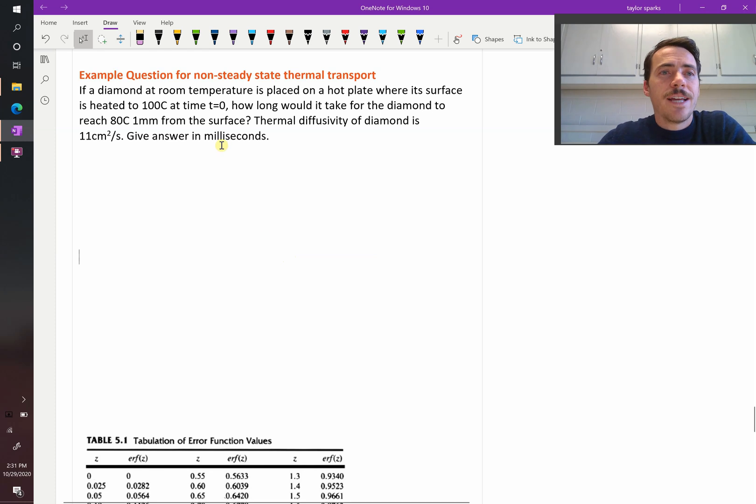How about this question? If a diamond at room temperature is placed on a hot plate where the surface is heated to 100 degrees Celsius at time t equals zero, how long would it take for the diamond to reach 80 degrees Celsius one millimeter from the surface? The thermal diffusivity of diamond is 11 centimeters squared per second. Give your answer in milliseconds.